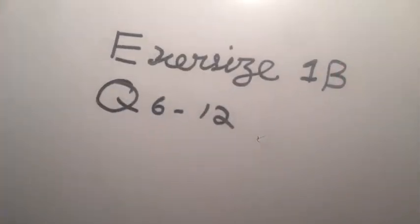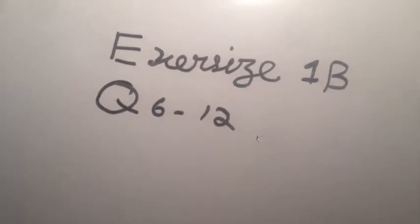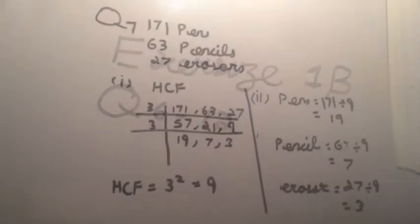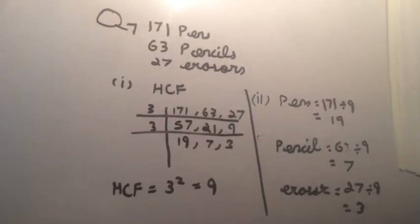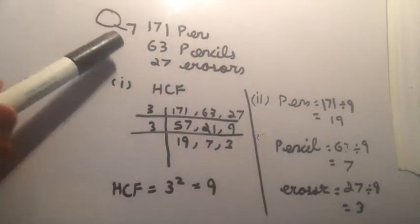Hi guys, welcome back to ILM Academy. In this video we are doing Exercise 1B from Question 6 to Question 12. Let's start from Question 7. Question 7 is: a company needs to pack 171 pens, 63 pencils, and 27 erasers into identical gift bags.